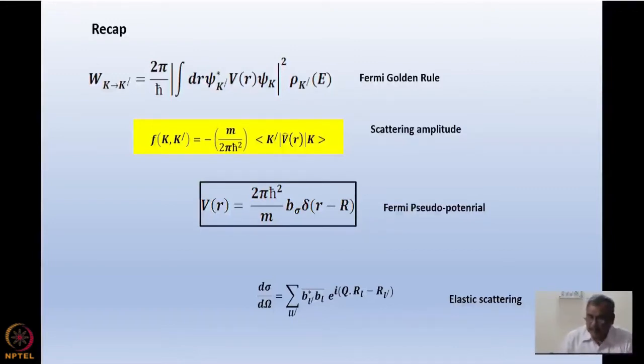I assumed a delta function potential known as Fermi pseudo-potential for the scattering system, because here so far I have assumed just neutron and nucleus interaction is acting. Because nucleus is very, very tiny, a femtometer size compared to the wavelength of the neutron which is angstrom, I can assume it as a delta function potential.